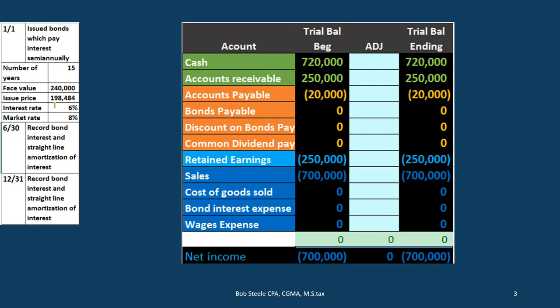First, let's discuss what a bond is compared to a note and review our information. We issued a bond that pays interest semi-annually. It's a 15-year, semi-annual bond with a face value of $240,000 and an interest rate of 6%. These terms are part of the bond — set in stone. If we were working a problem, these are things you want to think of as fixed; we cannot change them.